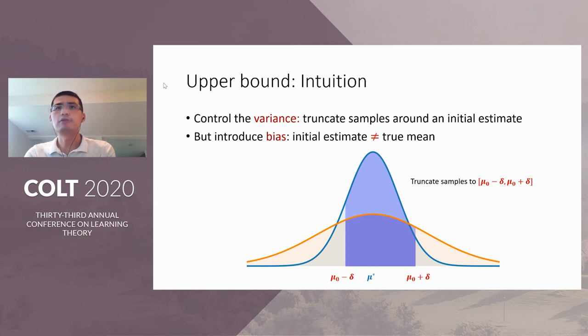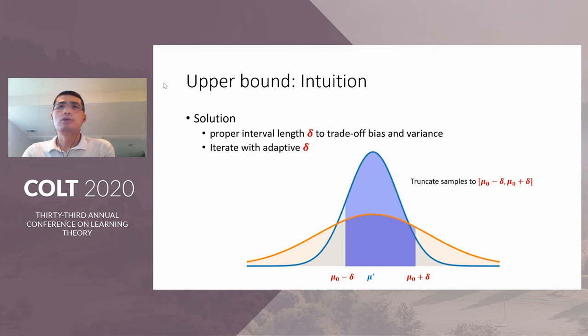Then a very natural idea to control the variance is to truncate the samples. In particular, we can truncate the samples into an interval centered around an initial estimate mu zero with interval length delta. In other words, we truncate the samples to the interval mu zero minus delta and mu zero plus delta. However, this introduces bias just because the initial estimate mu zero is different from the true mean. So this introduces some form of bias variance trade-off. So our idea is to choose a proper value for the interval length delta to get the best trade-off between bias and variance so that we can make improvement over the current estimate by averaging the truncated samples.